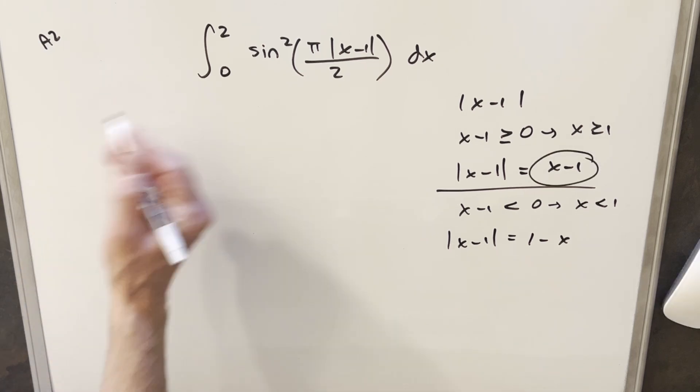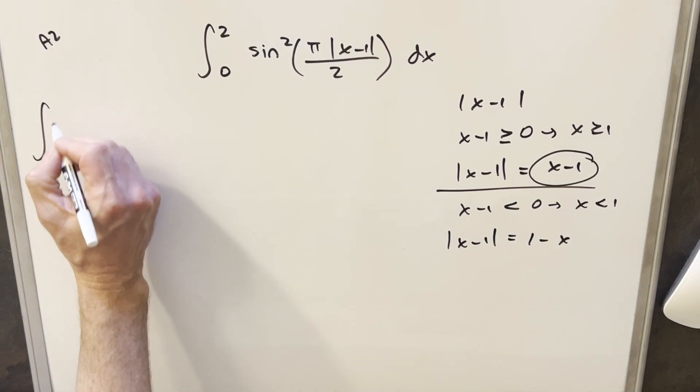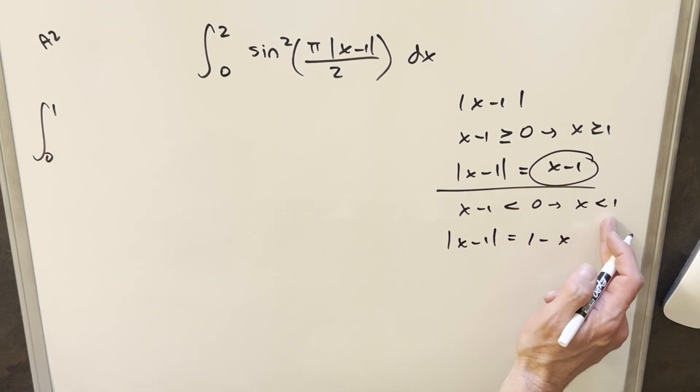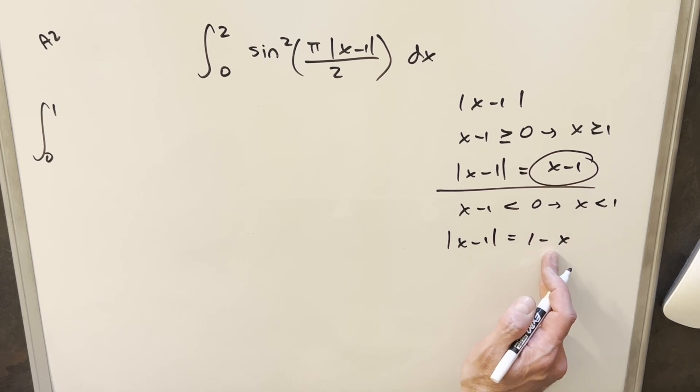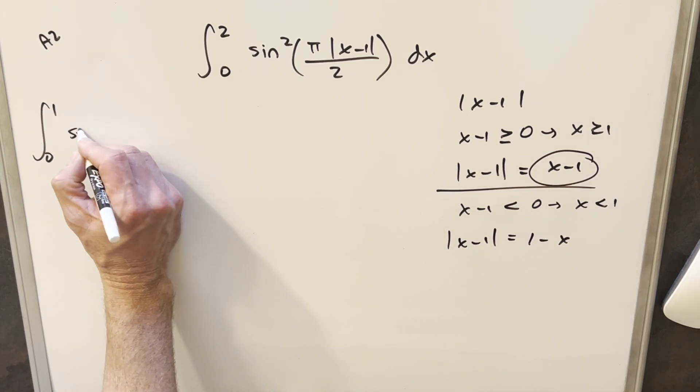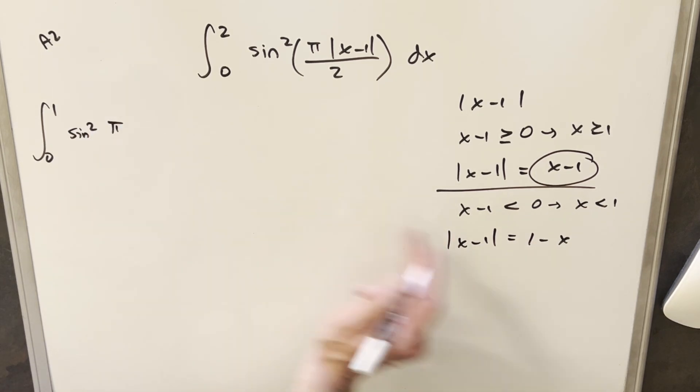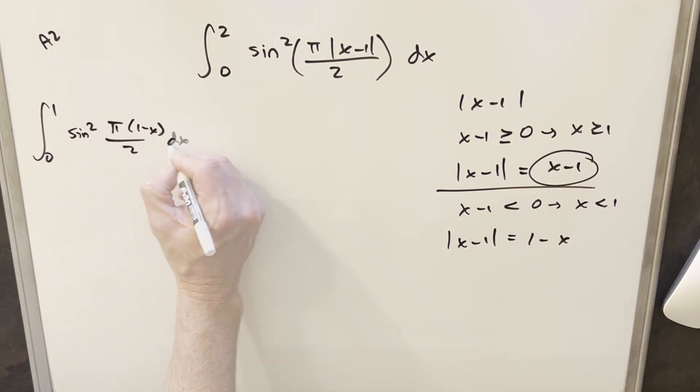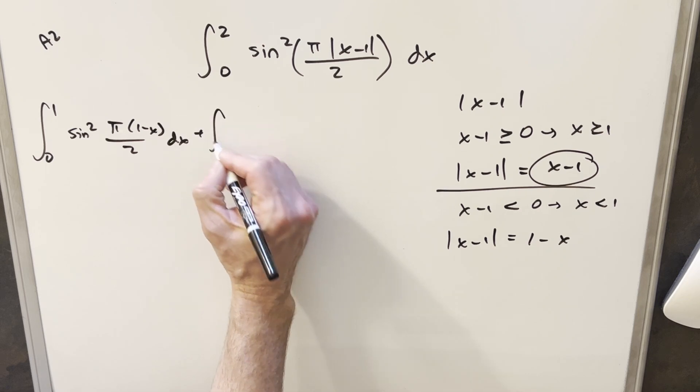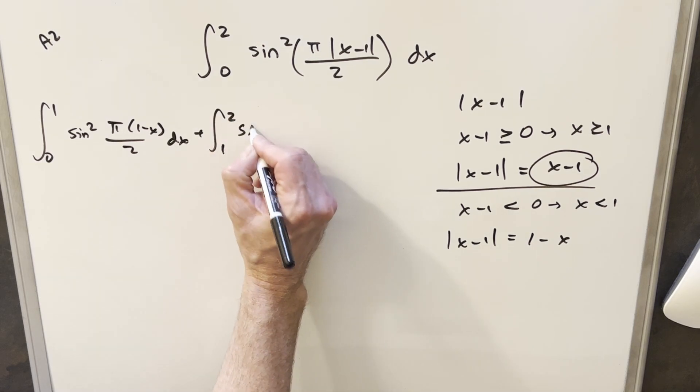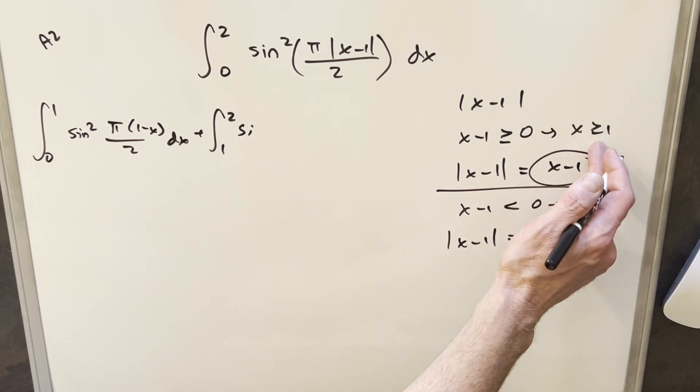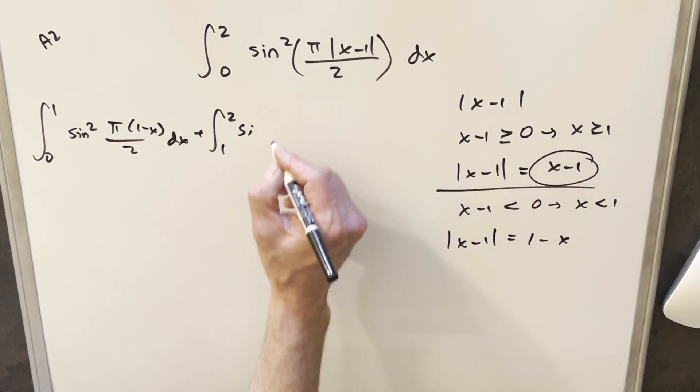So what this allows me to do is break up our bounds of the integral on 1 and split this into two integrals. For this first integral, we'll integrate from 0 to 1. That's this case here, because in this whole region, x is less than 1. So we'll use this value and have sine squared pi times 1 minus x over 2. Then for the rest of the integral, we'll integrate from 1 to 2. We'll use this value, x minus 1, because from 1 to 2, we're always greater than 1, this is always positive.